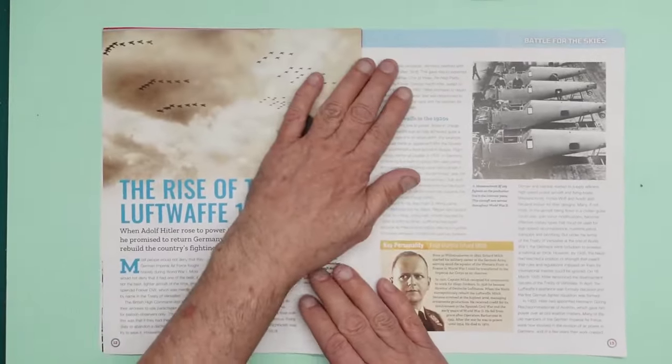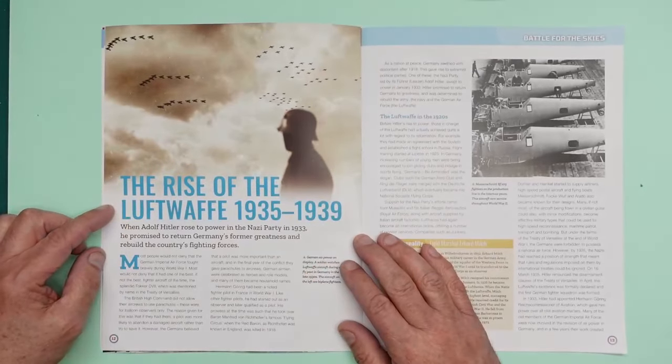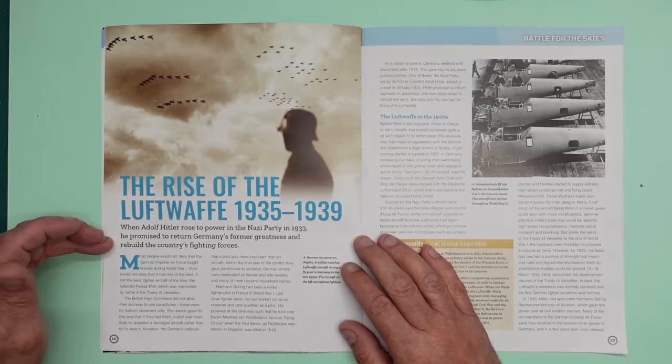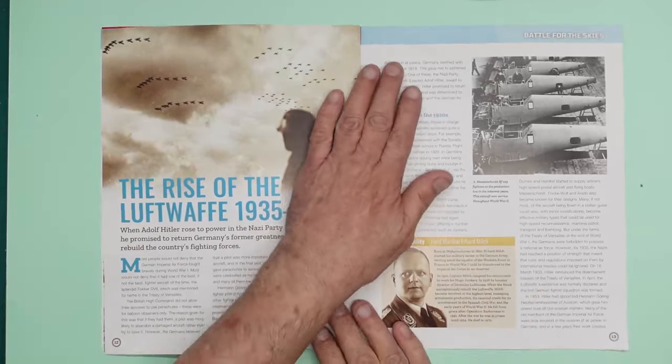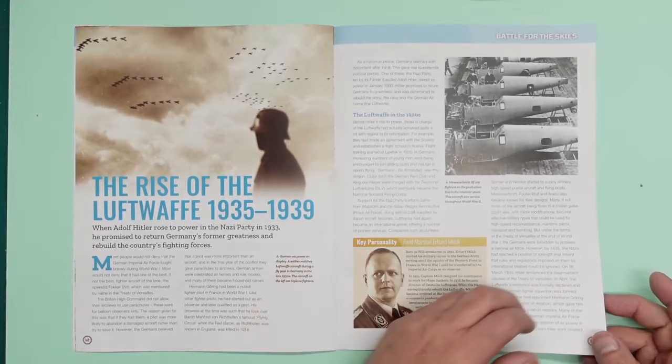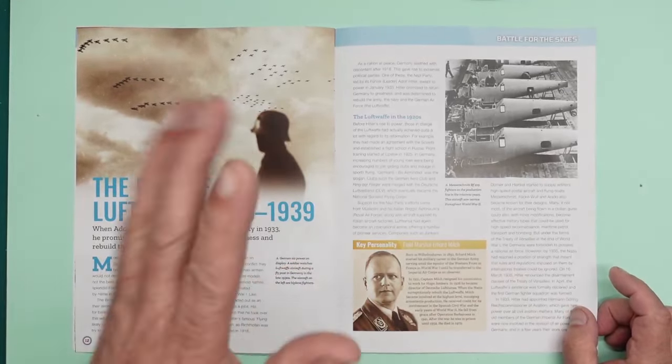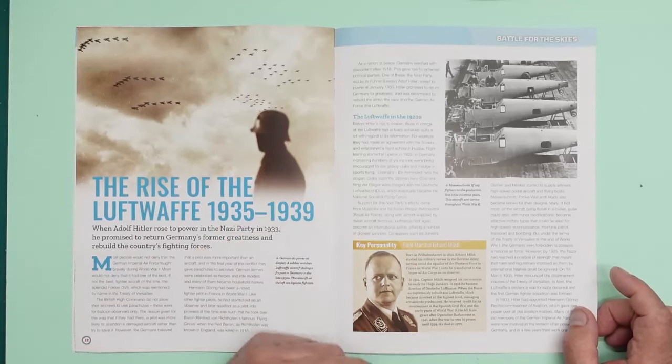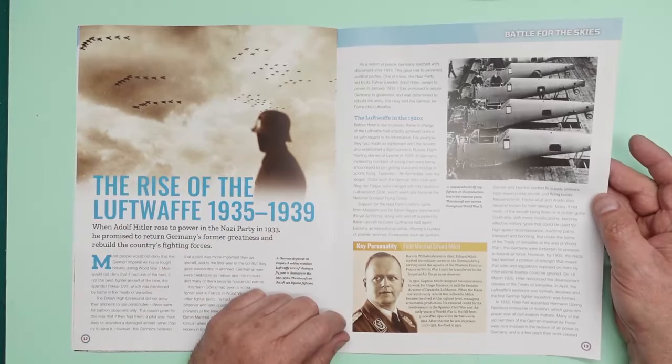Over the page, the rise of the Luftwaffe, 1935 to 1939. When Adolf Hitler rose to power in the Nazi power in 1933, he promised to return Germany's former greatness and rebuild the country's fighting forces. There are many, many documentaries you can find on YouTube all about that. What they did was very, very naughty. But they sort of craftily managed to put together and train a lot of pilots for airliners. They built some airliners, which then became bombers. You can read all about that.